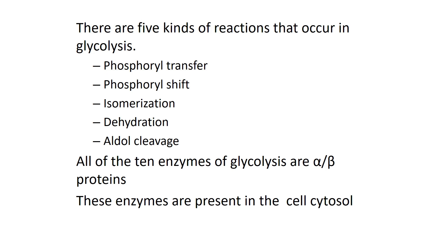The intermediates of glycolysis are either six-carbon compounds — like glucose-6-phosphate and fructose-6-phosphate — or three-carbon compounds like dihydroxyacetone phosphate or glyceraldehyde-3-phosphate. All six-carbon units are derivatives of glucose and fructose. All three-carbon units are derivatives of dihydroxyacetone phosphate, glyceraldehyde, or pyruvate. This is the basic background before we get into understanding glycolysis.